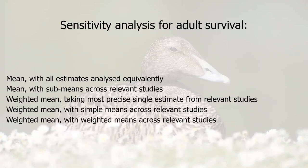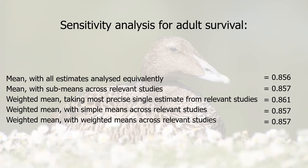To show the effect of these decisions, we have a sensitivity analysis for adult survival. If you take the dataset and compute a mean with all sub-estimates analysed equivalently, you get 0.856. A simple mean after applying sub-means across the relevant studies gives 0.857. A weighted mean using the meta-analysis methodology but sending forward only the most precise single estimate gives quite a significantly higher value of 0.861, whereas the weighted mean with either simple sub-means or weighted sub-means gives 0.857. While these values might not seem large, adult survival ranges from 0 to 1 and is very influential on population dynamics, so small changes make a big difference.